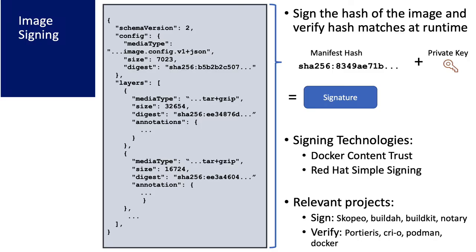Let's talk about specific technologies, starting with image signing. In image signing, what we're really out to do is to ensure that the image has not been tampered with from build to runtime. This is done by taking the manifest of the image — here is an example of what the OCI image manifest may look like — and by taking the hash of the manifest and then using a private key to cryptographically sign it, we end up with a signature. At runtime, the runtime downloads the image from the registry and checks that the hash of the manifest it downloads matches the hash within the cryptographically signed signature. Only if the hashes match will it proceed to run the image.